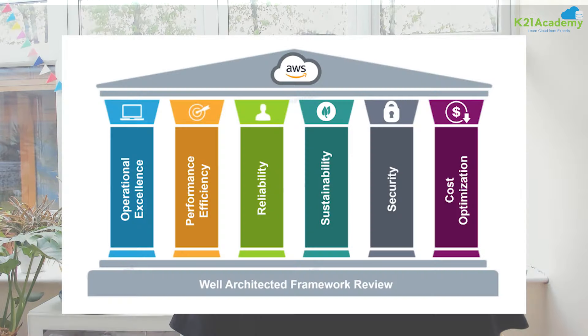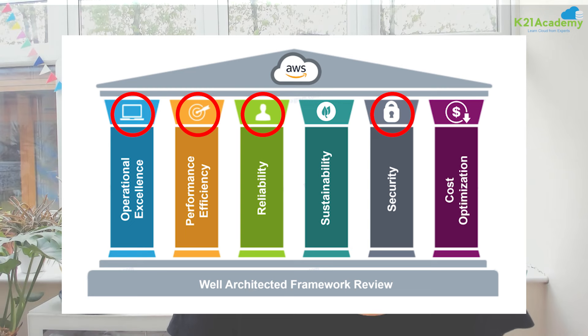If you're preparing for AWS jobs in cloud as an architect, or preparing for certification as an AWS Solutions Architect Associate or Professional, then you should be very well versed with AWS's well-architected framework, which consists of six pillars: security, operational excellence, reliability, performance, cost optimization, and sustainability. In this first part of a six-part video series, we are going to cover the security pillar.